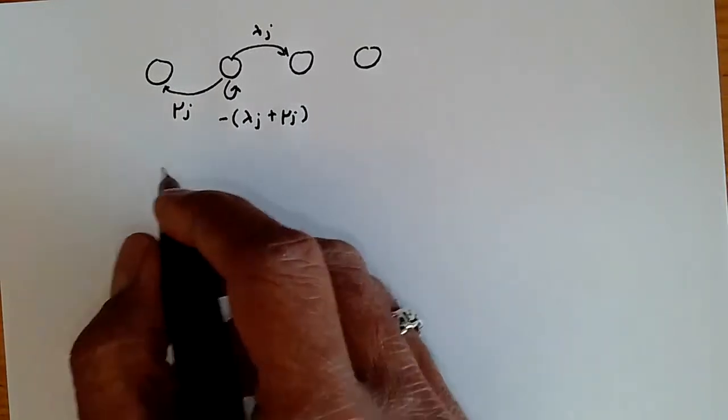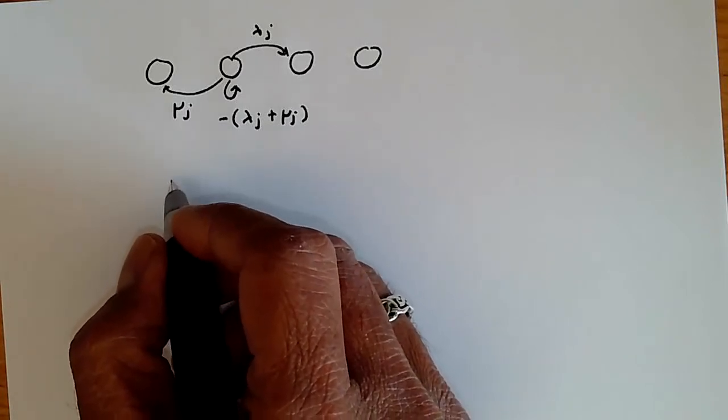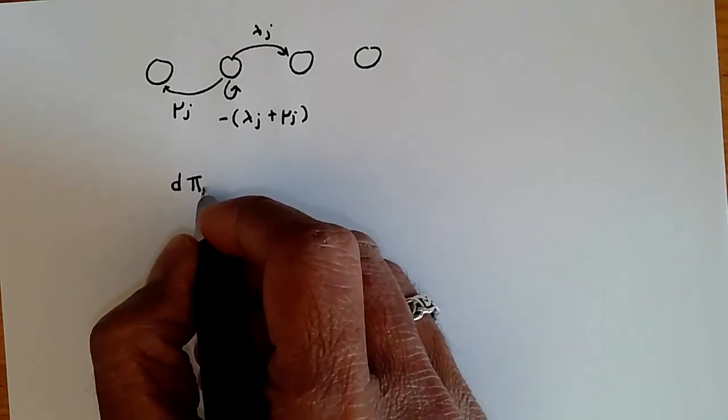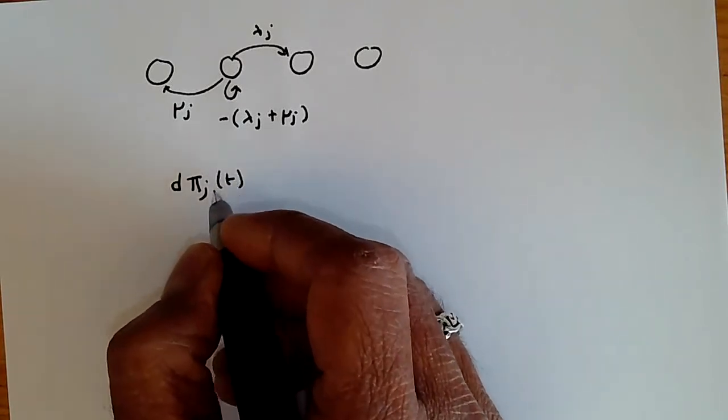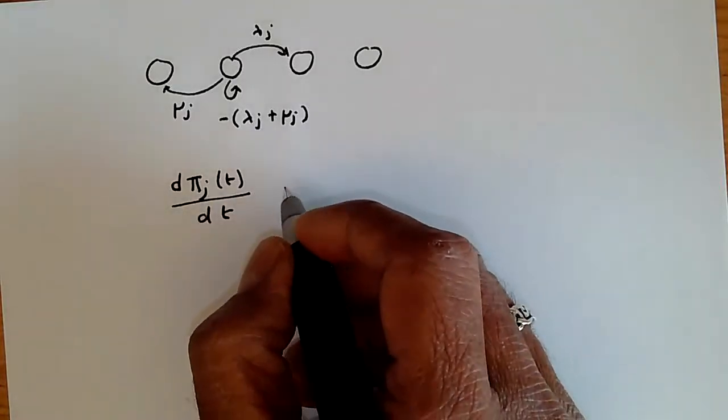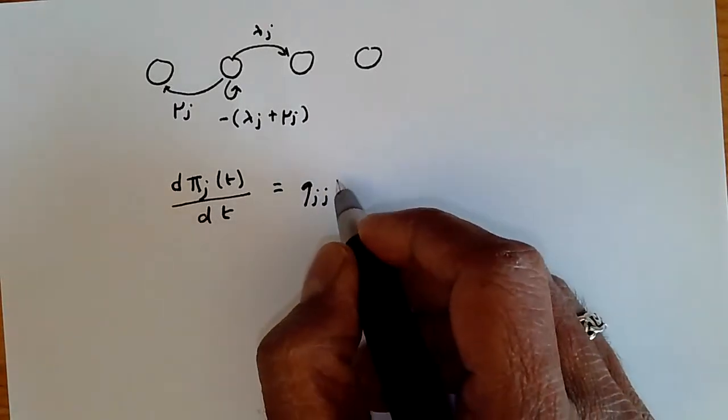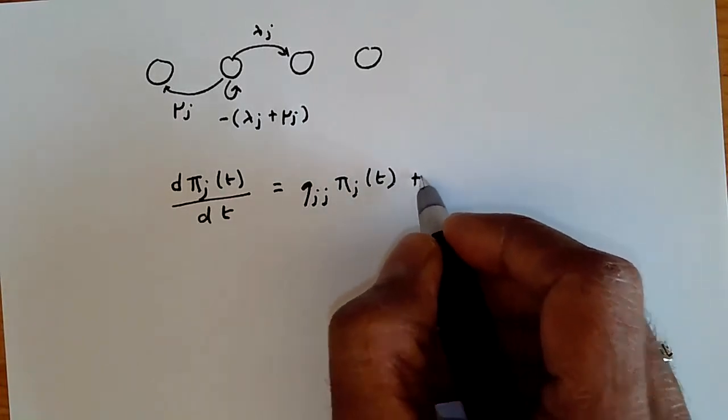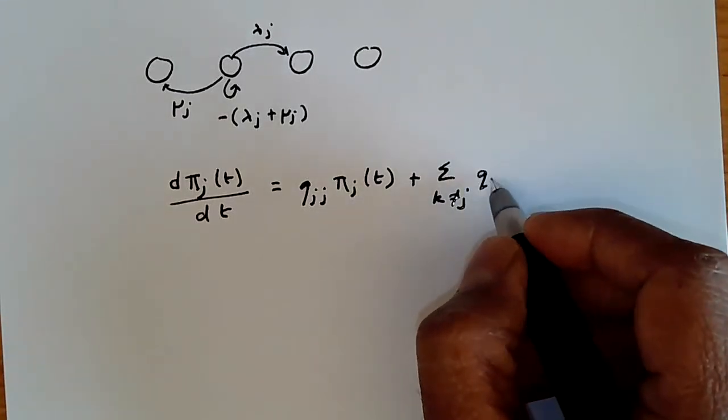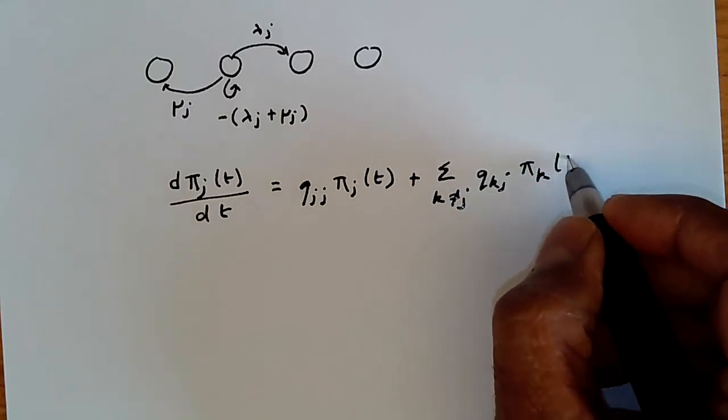Without proof, I'm just going to state for any continuous time Markov chain, the following holds true: the rate at which we change d pi j by dt, the rate at which the probability of being in state j changes, is given by q j j pi j(t) plus sigma k not equal to j, q k j pi k(t).